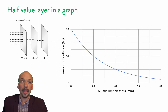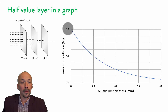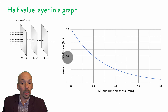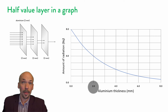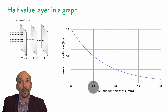As you can see here, with an aluminium thickness of 0 mm we have a radiation of 8 Bql. If the radiation drops by half, so we go to 4, you can see that it's 2 mm. So for this radiation and with this material aluminium, the half value layer or the half value thickness is 2 mm.